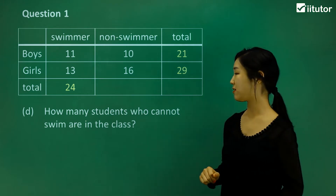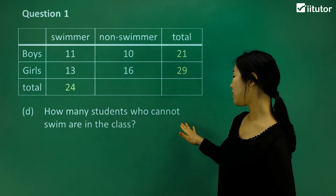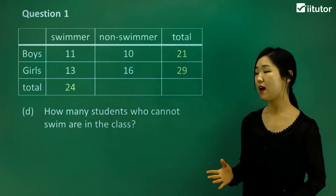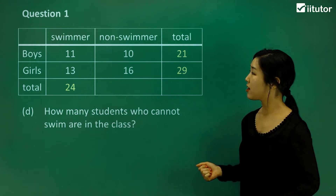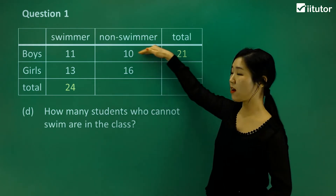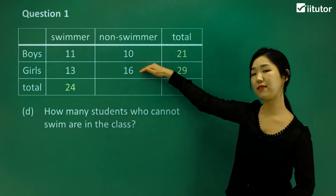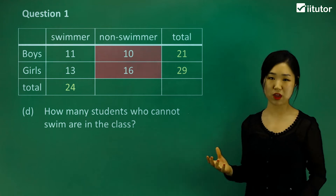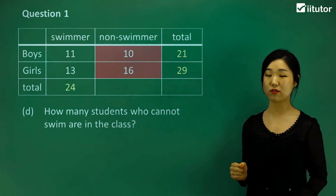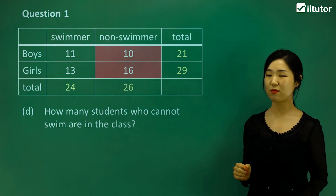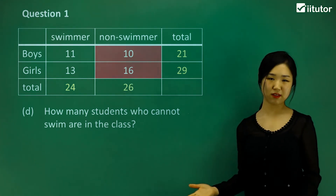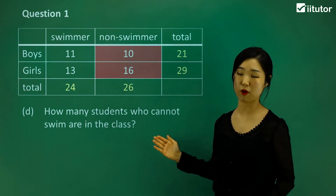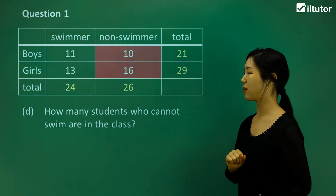The next question asks how many students cannot swim. Looking at the non-swimmers: there are 10 boys and 16 girls, so together they give us the total non-swimmers. Adding them together is just 26. Make sure you're looking at the right column or row depending on the question.